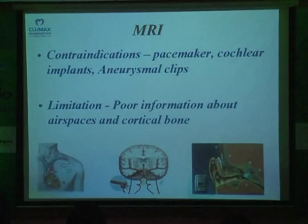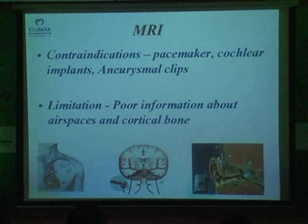The contraindications for MR include pacemakers. We do a lot of MR for children who need cochlear implants, and their parents may have a pacemaker. Please, as ENT people, when you send a child, also ensure the parents and grandparents do not have a pacemaker, because we cannot put a patient — nor an attendant — in the MR room if they have a pacemaker. Second is a cochlear implant — we cannot do MR with one in place. Third is a neurostimulator. And MR is extremely poor for cortical bone.